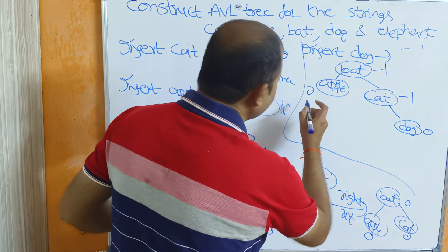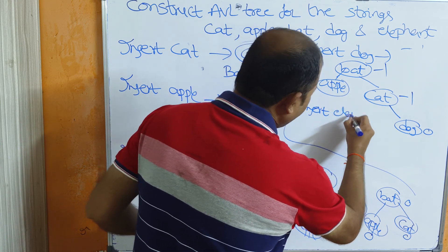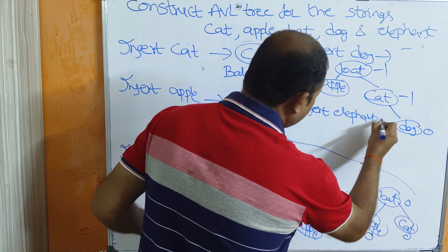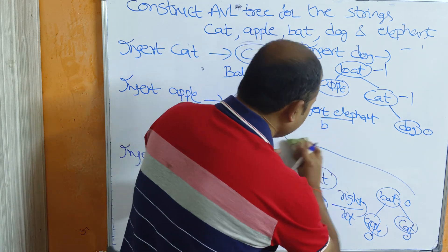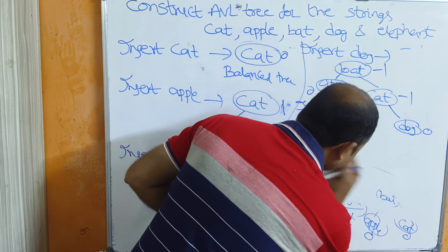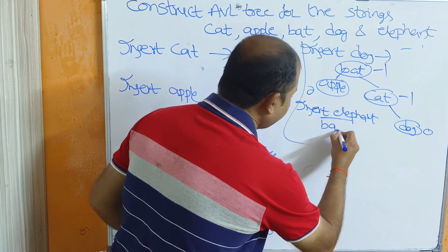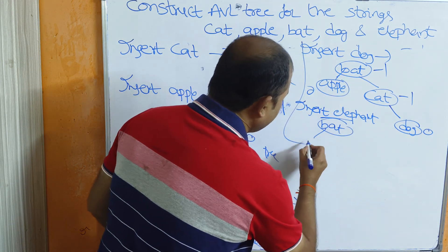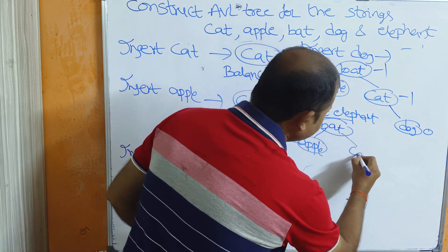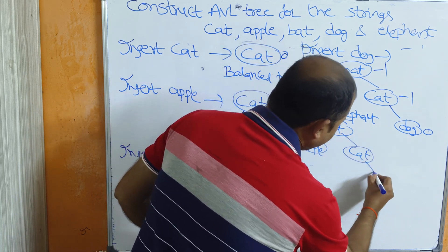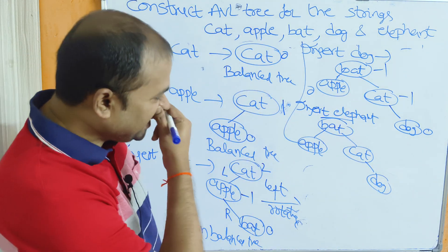Now insert the last node, 'elephant'. The previous tree has bat as root, apple as left child, cat as right child, and dog as cat's right child.